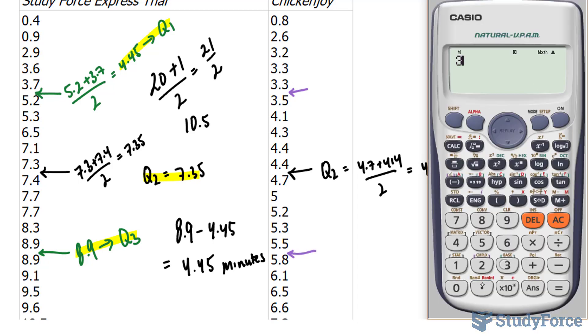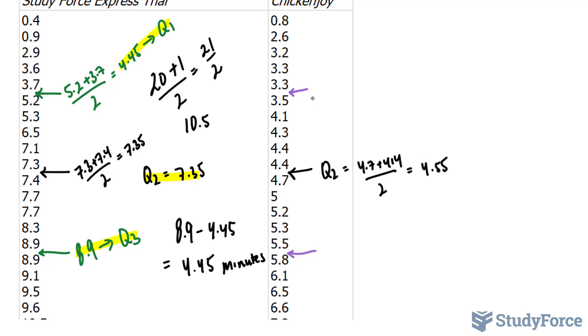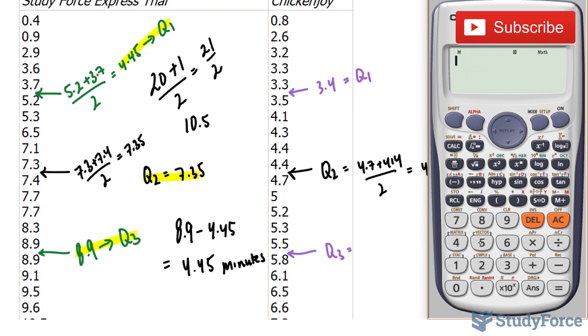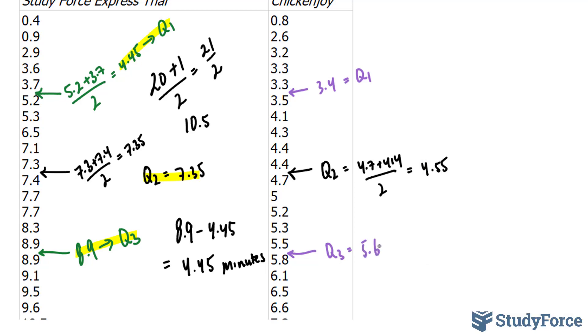So let's do this calculation. 3.5 plus 3.3 divided by 2. And that gives us 3.4. This will represent your Q1. And of course, our Q3 will be 5.8 plus 5.5 divided by 2. And that gives us 5.65.